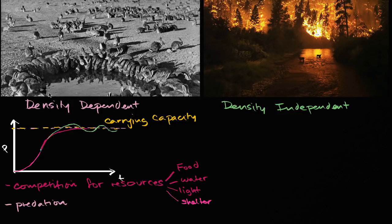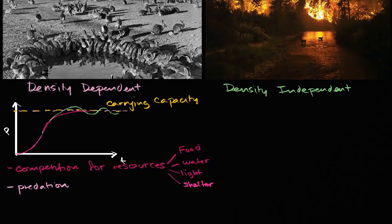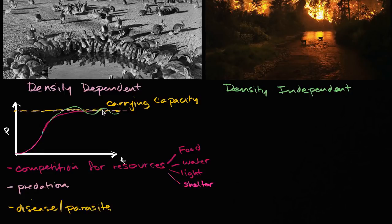Another factor that might be a little less obvious: when you have a high density population — and there are examples of this in medieval Europe and in modern times with human populations, but this happens with all organisms — when you become a dense population, there's more interaction, more contact, more sharing of resources like water. So disease and parasites become an issue and can spread much easier, becoming much more likely to start limiting the population. The plague in medieval times comes to mind — it spread very easily from one human to the next, or from rats to humans.